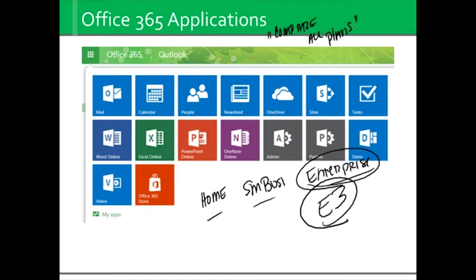So assuming that everyone is on E3, we have email, we have calendar, we have people. And if you've ever used Outlook on a computer, it's the exact same thing. We have newsfeeds. This is the interesting one because, even though this is a recent screenshot, that depends 100% on how the back end of Office has been configured as to whether or not you have a newsfeed available to you. Also, you can replace newsfeed with Yammer if you have a Yammer license. And there's a new one coming out called Enterprise Social where it's really pulling the newsfeed, the Yammer, and everything else in together.